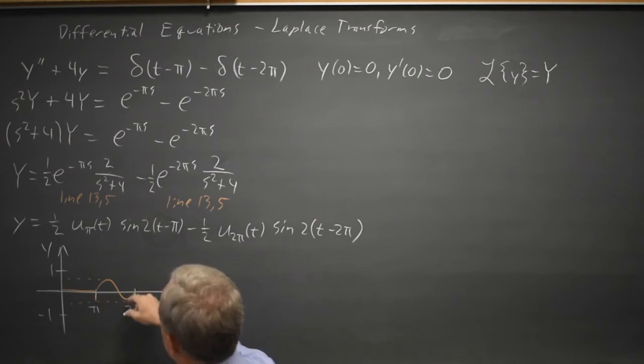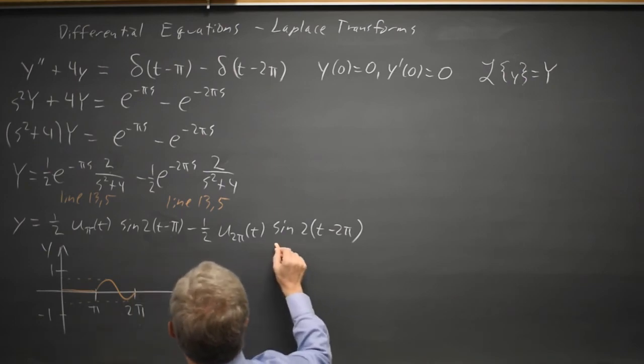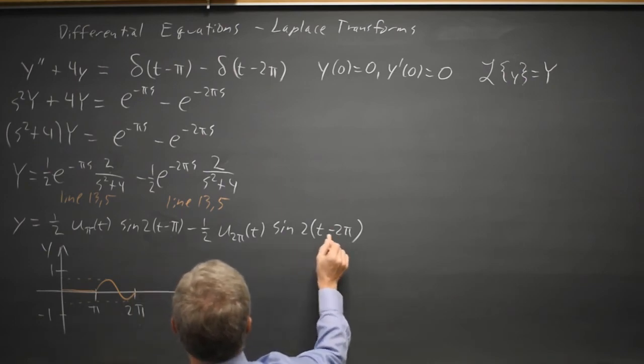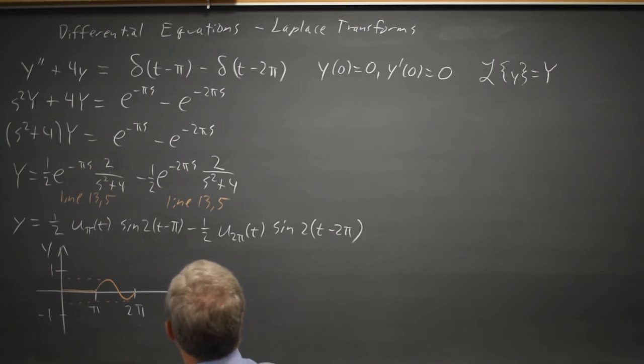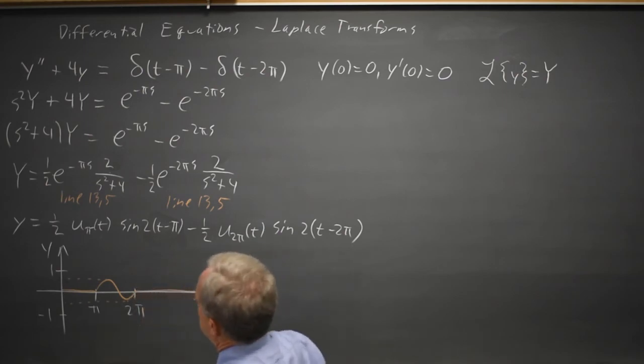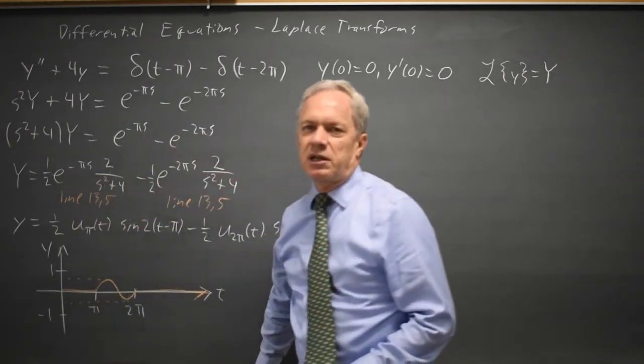And when I add the sin that's shifted to the right by 2 full periods, 1 half of the first sign minus 1 half of the second, they will cancel, and I go back to equilibrium at rest.